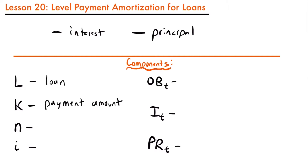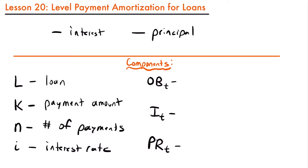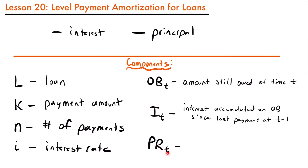In this video, we are only going to be looking at level payment amortization, so this amount K is always going to be the same. Next we have N, the number of payments made, and I, the effective interest rate. Then here are the three most important components: capital OB sub T, the outstanding balance at time T — the amount still owed on a loan at a particular time. Next, capital I sub T, the interest accumulated on our outstanding balance since the last payment. And finally, capital PR sub T, the principal repaid at time T.